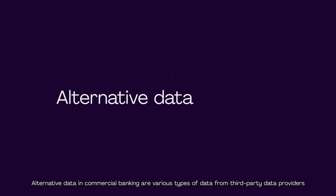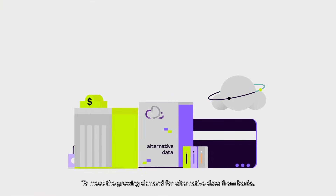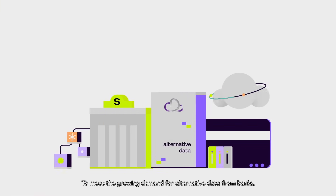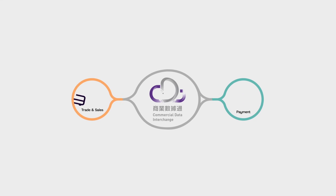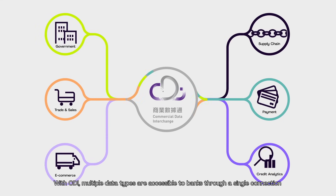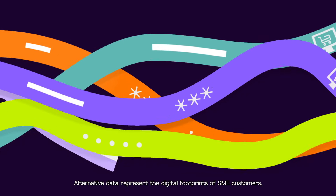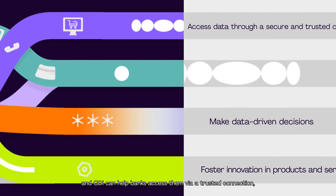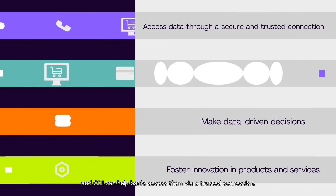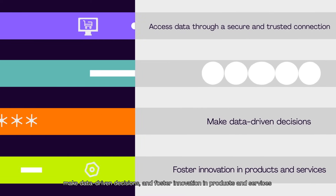Alternative data in commercial banking refers to various types of data from third-party data providers. To meet the growing demand for alternative data from banks, the HKMA launched Commercial Data Interchange (CDI) in 2022. With CDI, multiple data types are accessible to banks through a single connection. Alternative data represent the digital footprints of SME customers, and CDI can help banks access them via a trusted connection, making data-driven decisions and fostering innovation in products and services.